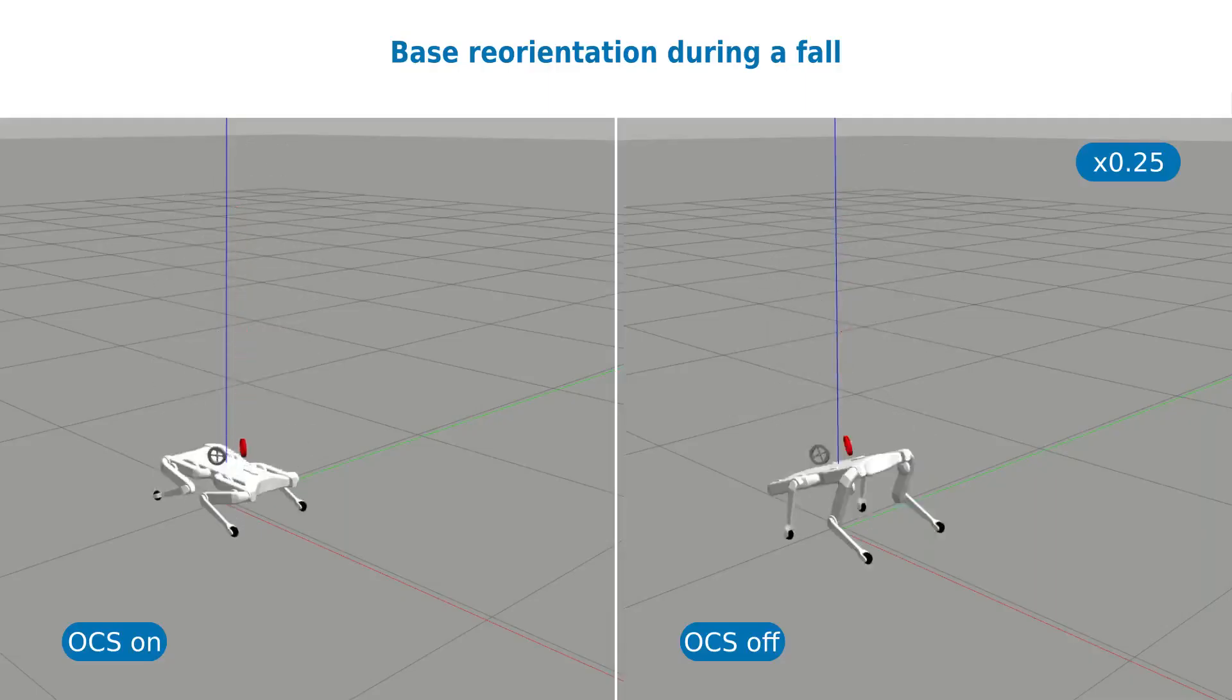Starting with a pitch orientation of 30 degrees, it is possible to drastically reduce forward and pitch oscillation if the flywheels are actuated.